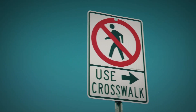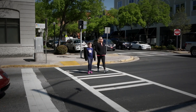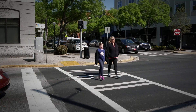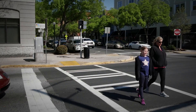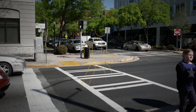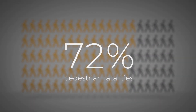In general, a safe place for pedestrians to cross the road is at a well-marked, controlled location, often at an intersection. But in 2016, 72% of pedestrian fatalities occurred at mid-block locations, between intersections.